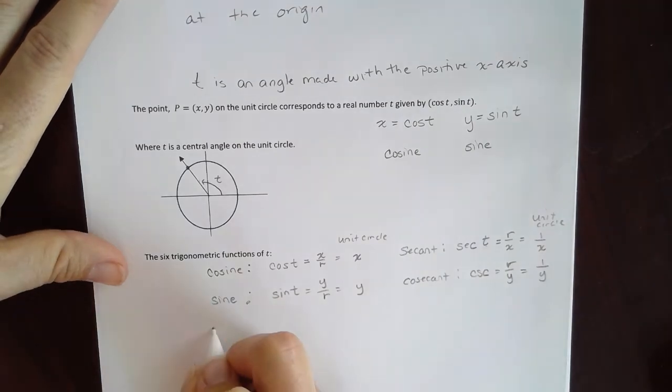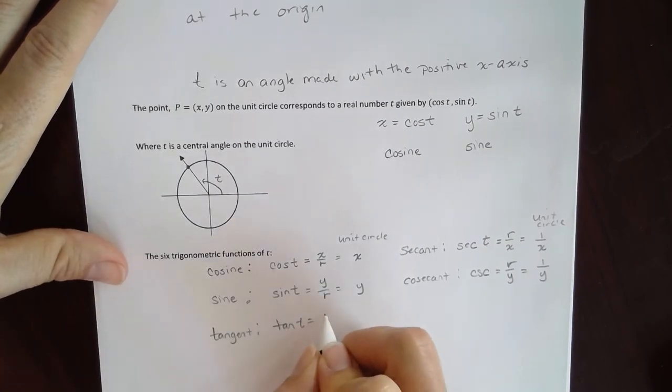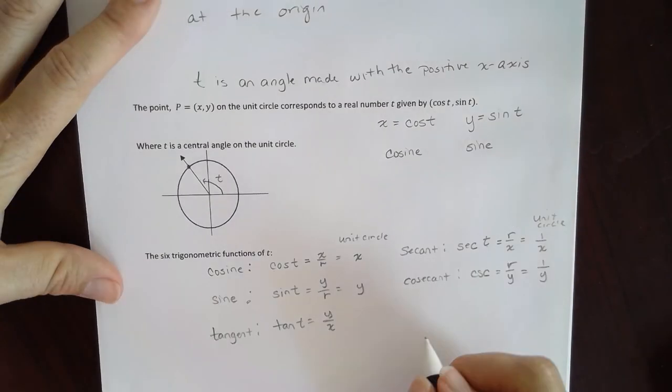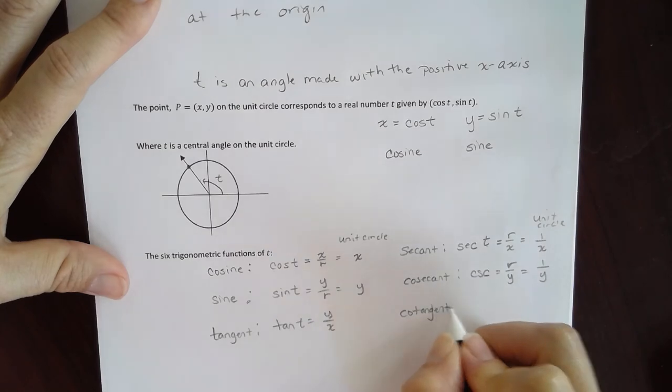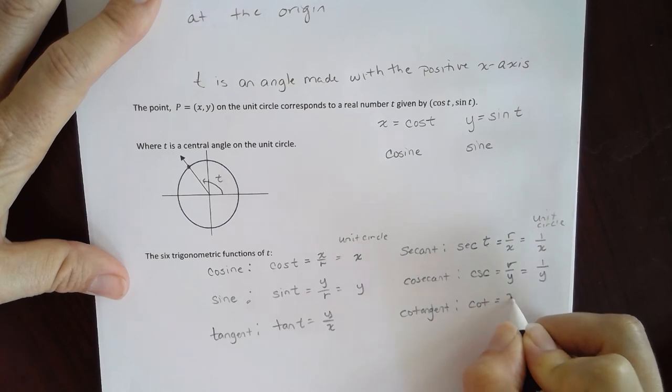Then we have something called tangent. And the value of tangent, tan, is going to be y over x. And then because r is not involved, it's always going to be y over x. And then the reciprocal of that we'll call cotangent. And that's going to be cot. And that will be x over y.